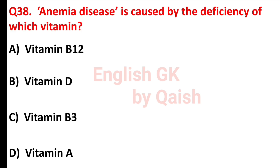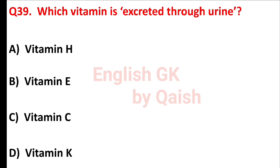Anemia disease is caused by the deficiency of which vitamin? Answer is option A, vitamin B12. Which vitamin is excreted through urine? Answer is option C, vitamin C.